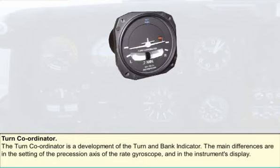The turn coordinator is an interesting development of the turn and bank indicator. The primary differences between the turn and bank indicator and the turn coordinator are in the setting of the precession axis of the rate gyroscope and in the method of display.